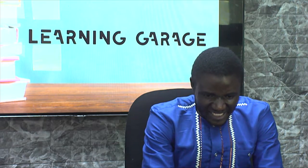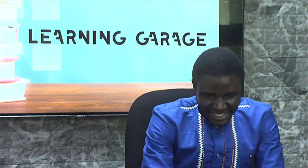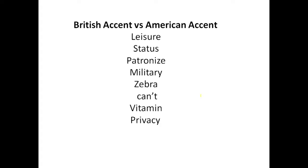I have here a couple of words. Let's quickly see how these two accents pronounce the words. For instance, leisure — British say: leisure; American say: leisure. So leisure is British, leisure is American.